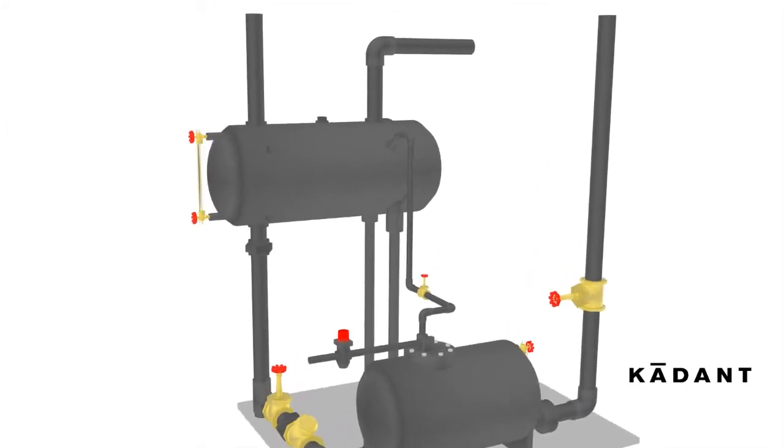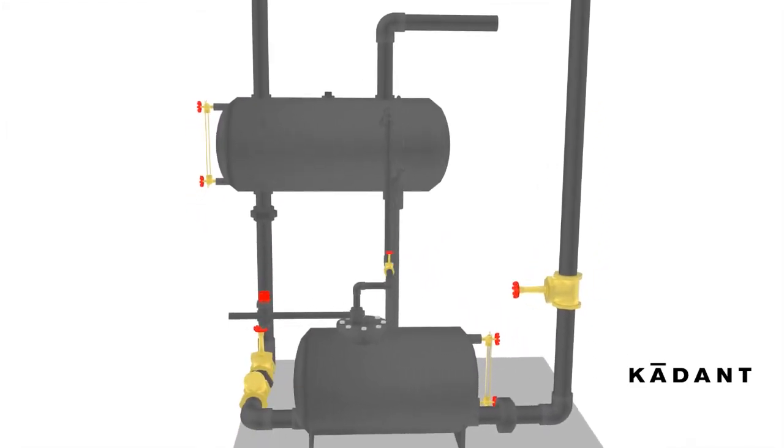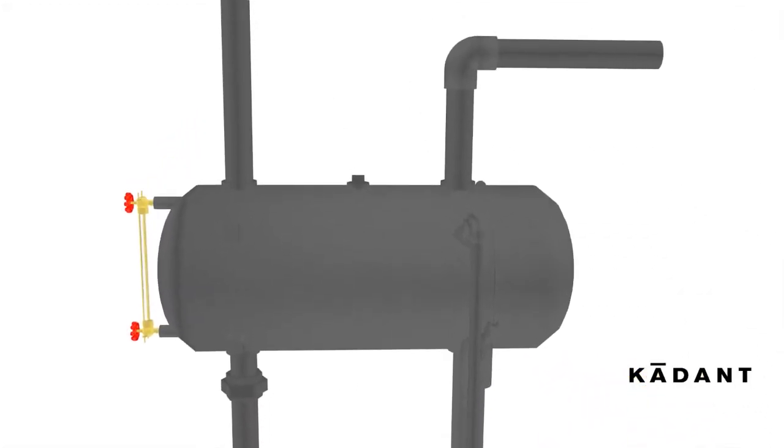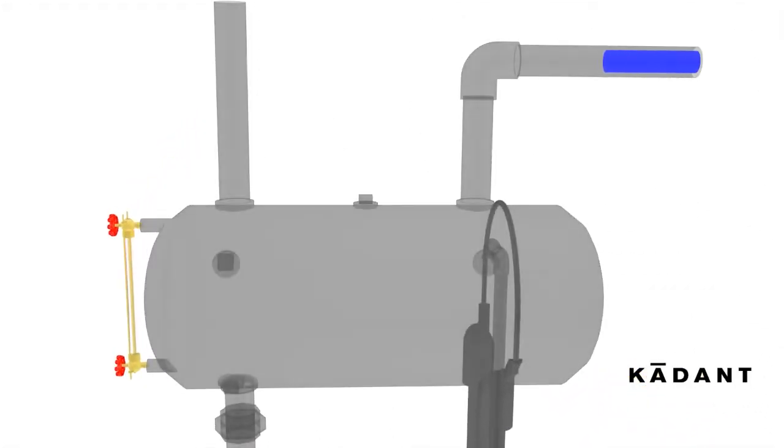This animation will demonstrate the operation of a Cadent Johnson float-operated liquid mover pump. Condensate being drained from steam equipment flows into the receiver and is allowed to flash.